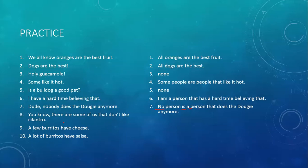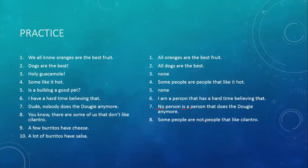You know, there are some of us that don't like cilantro. For this one, 'you know' is also extraneous. You could translate this to: some people are not people that like cilantro. Notice this is a some-are-not — a type O proposition. You could also write this as a type I if you said: some people are people that don't like cilantro. That works too. There are two ways you could write it — you'd be changing what the term is. In one case you're working with the term 'people that like cilantro,' in the other 'people that don't like cilantro.' But either one works.